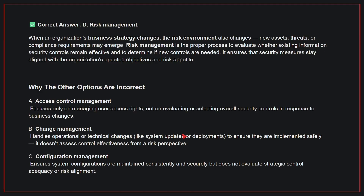Why are the other options incorrect? A: Access control management — this focuses only on managing user access rights, not on evaluating or selecting overall security controls in response to business changes. B: Change management — this handles operational or technical changes to ensure they are implemented safely; it doesn't assess control effectiveness from a risk perspective. C: Configuration management — this ensures system configurations are maintained consistently and securely, but does not evaluate strategic control adequacy or risk alignment. Therefore, the correct answer is D.